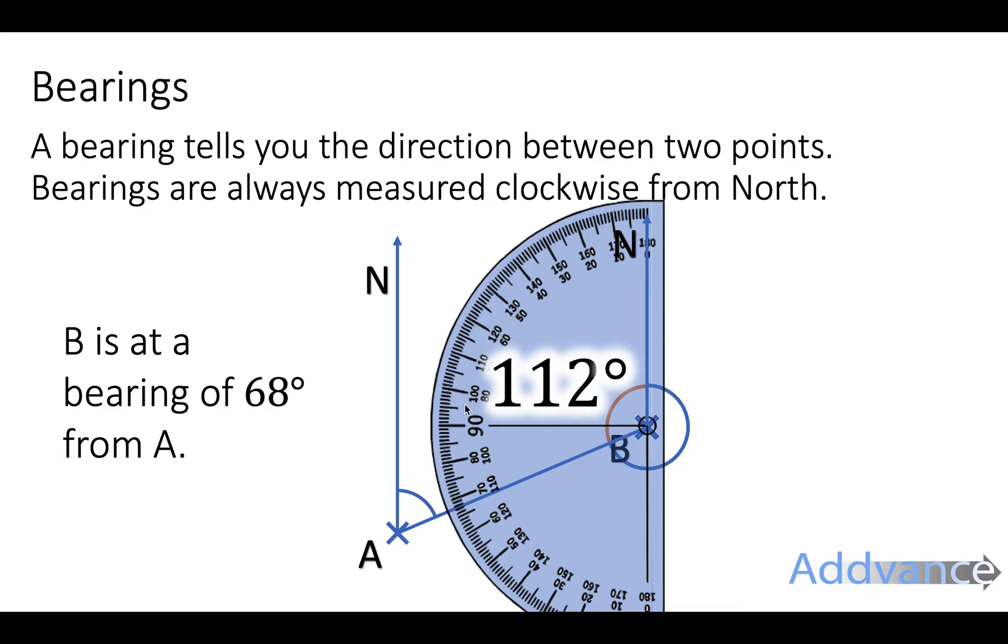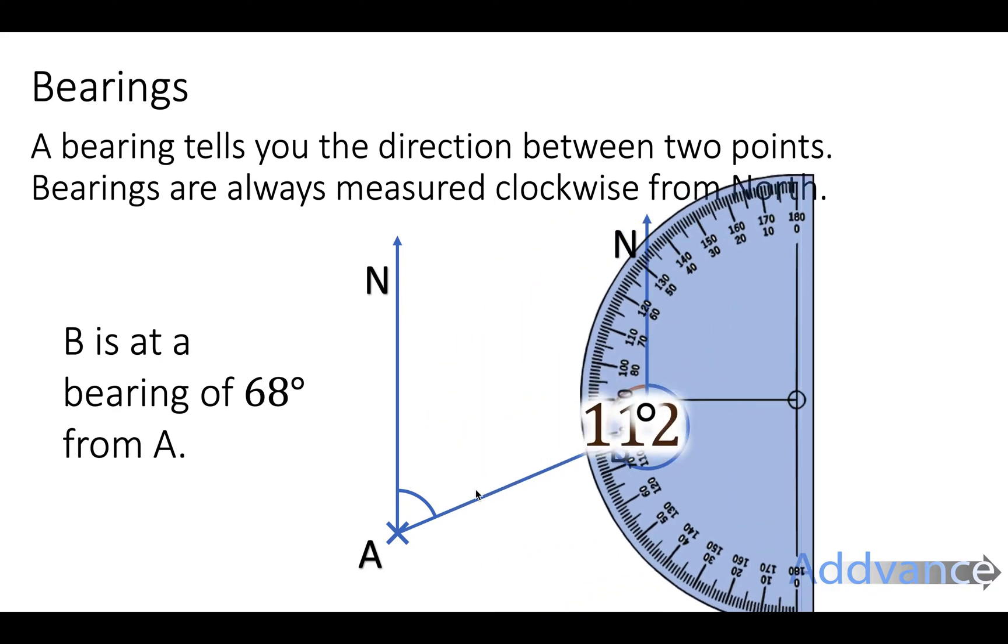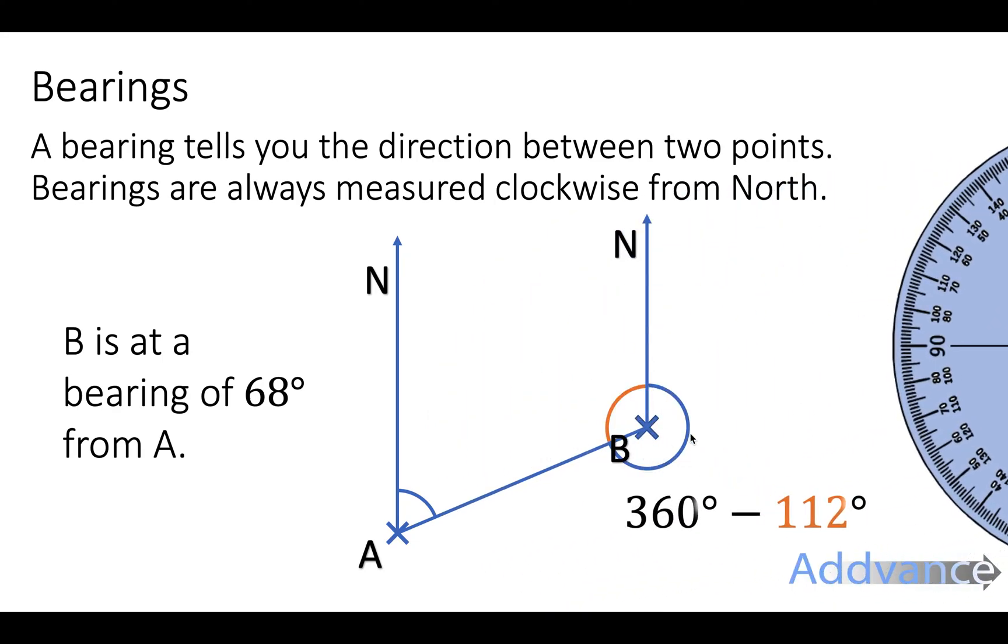Reading the protractor carefully, 112 is down here, and therefore this blue angle will be 360 minus 112, which will be 248 degrees. So A is at a bearing of 248 degrees from B, and that's the final answer. We have got the two sets of bearings now. That's how you work out bearings using a protractor when you've got the diagram already drawn for you.